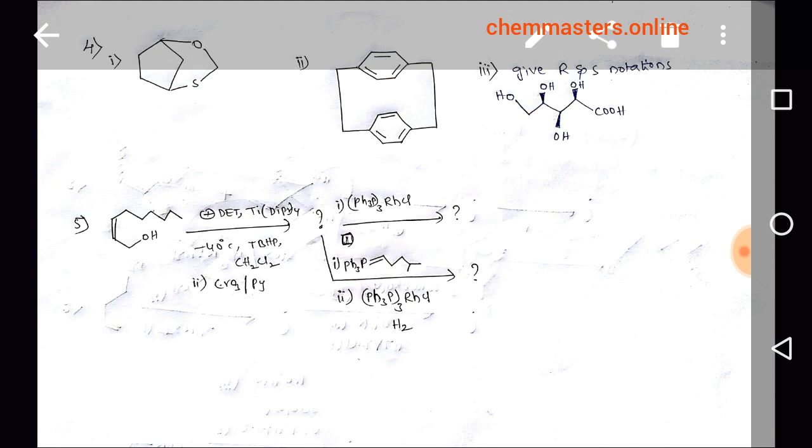The allylic alcohol reacts with D-80, diisopropyl titanium, TBDH, dichloromethane, chlorochromate reagent, and pyridine. What is the product? In the next part, if you add Wilkinson catalyst, what is the product?